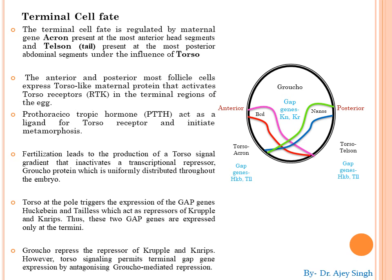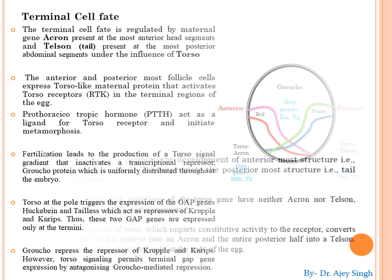Groucho represses the repressor of Krüppel and Nrip। Center पे Groucho present है, और Groucho वहाँ Krüppel और Nrip को repress करने वालों को repress कर देता है। इसका मतलब center में आपको Huckebein और Tailless देखने को नहीं मिलेंगे — center पे आपको Krüppel और Nrip gap genes देखने को मिलेंगी। इस तरीके से anterior side पे acron और torso, वहीं posterior side पे telson और torso देखने को मिलेगा।